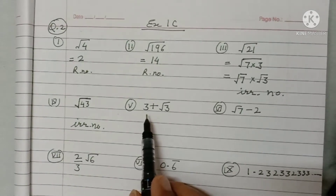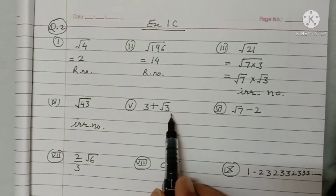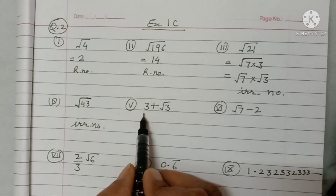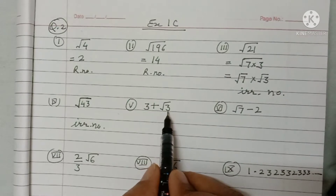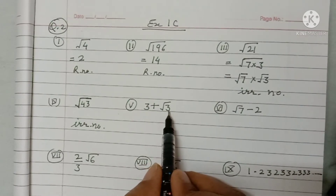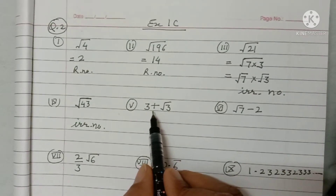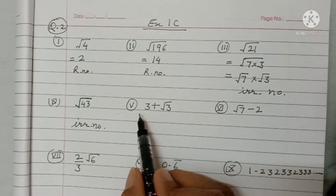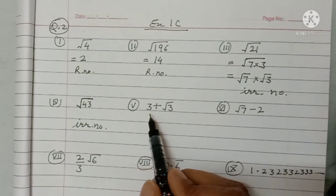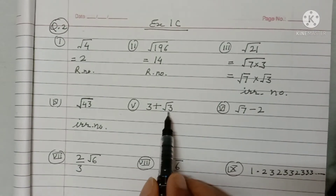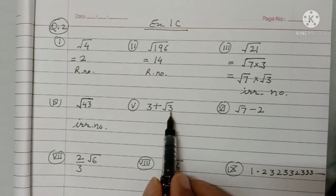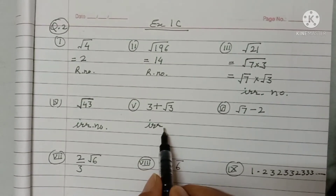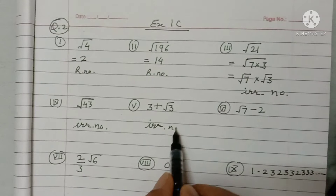Part five: 3 + √3. Here, 3 is a rational number and √3 is an irrational number. Based on the properties studied in the previous video, the sum of a rational number and an irrational number gives an irrational number. So this is an irrational number.